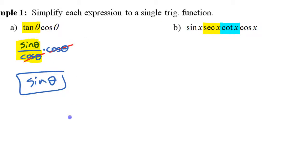So we're gonna leave this alone, sine x. We're gonna change secant into one over cosine x. We're gonna change cotangent into cos x over sine x. It's the reciprocal of tangent. So if tangent is sine over cos, cotangent is cos over sine.